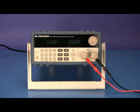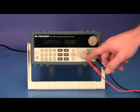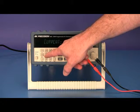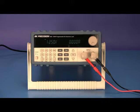To run a battery test, press the ISET button. Using the numeric keypad, enter the constant current value you wish to draw from the battery during the test, followed by pressing the enter button.